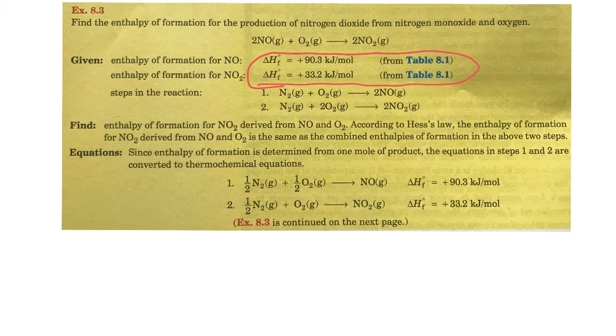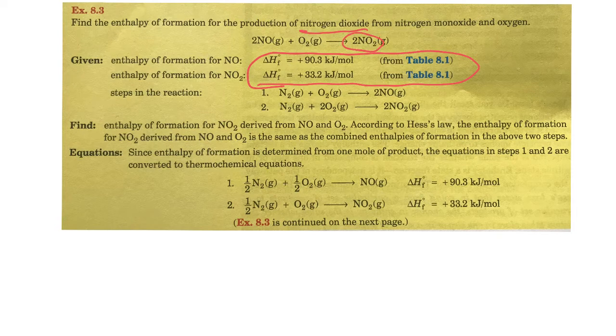They're telling us, find the enthalpy of formation for the production of nitrogen dioxide, that's this, from nitrogen monoxide, NO, and oxygen. Now, remember, oxygen is one of those diatomic molecules where oxygen, it's always O2, never just O.